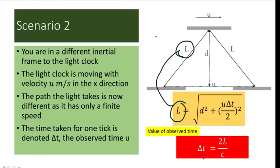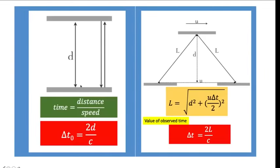This L in the numerator is equivalent to √(d² + (u·delta t / 2)²). Comparing the two scenarios — one where the observer is in the same inertial frame and one where the observer is outside — the proper time equals 2d/c, while for the second scenario the time is 2L/c. The key difference is that d is the direct vertical distance, whereas L is the diagonal hypotenuse, which is obviously longer. Since the distance traveled is longer, the computed time is greater — we say there is a dilation of time, or the time is expanded. That is why we call this time dilation.